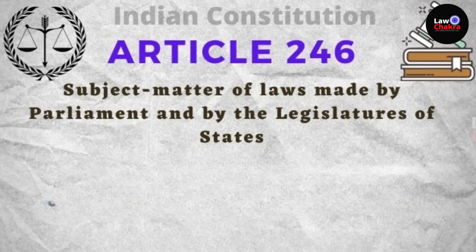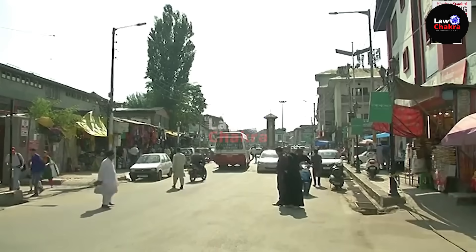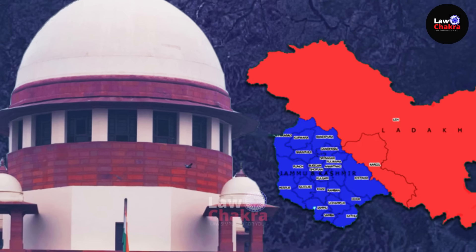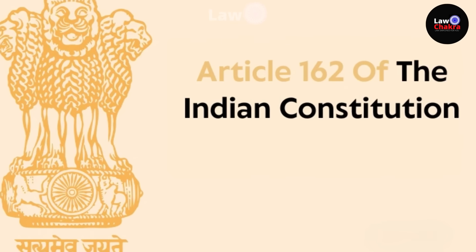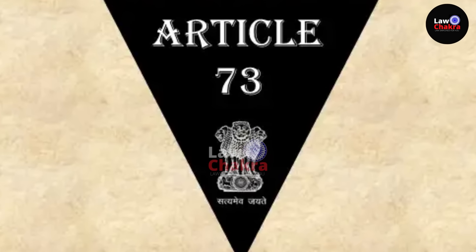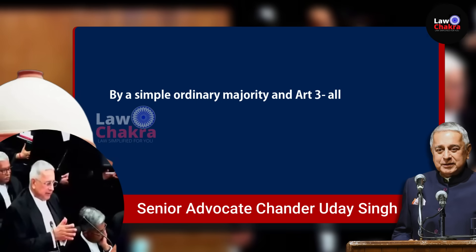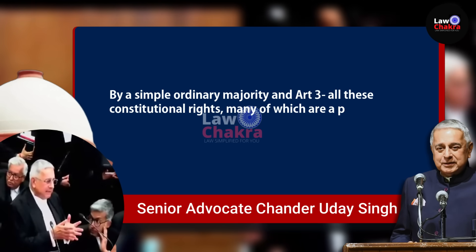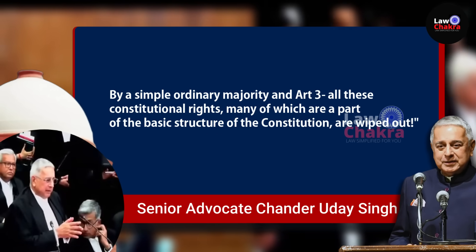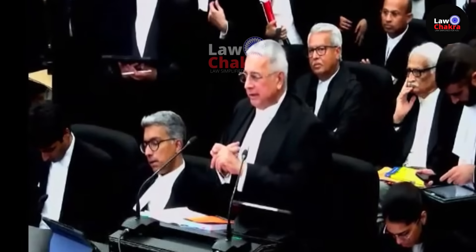Conversion के effect को highlight करते हुए, Singh ने बाकी constitutional provisions पर क्या असर पड़ा, ये भी बताया। पहला — Article 246 की legislative powers read with 7th Schedule, जो Jammu and Kashmir में apply होता था, वो effect हुआ जब powers state से center को transfer कर दी गईं। दूसरा — state की पास जो executive powers थीं under Article 162 concerning List 2 and 3, वो भी reduced हुईं। तीसरा — Article 73 जो कहता था कि Union, state list की powers को use नहीं कर सकता, वो भी बदल गई। He said: 'By a simple ordinary majority under Article 3, all these constitutional rights, many of which are a part of the basic structure of the Constitution, are wiped out।' इसलिए conversion सिर्फ Article 368 के under ही हो सकता है।